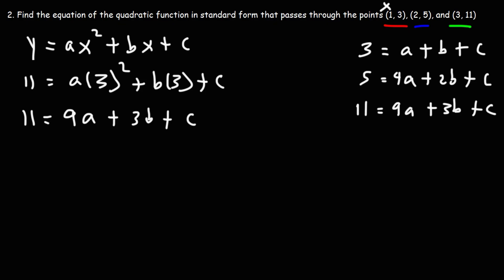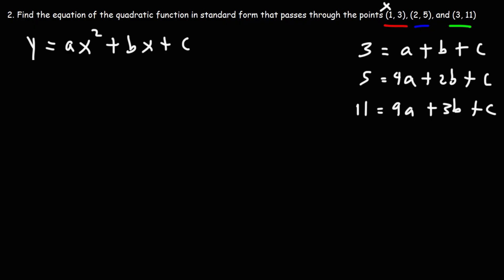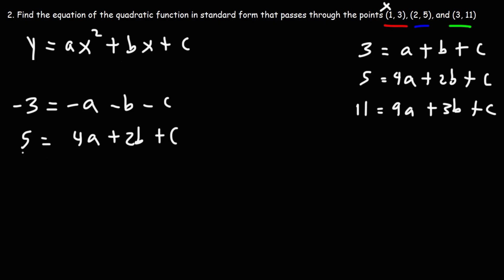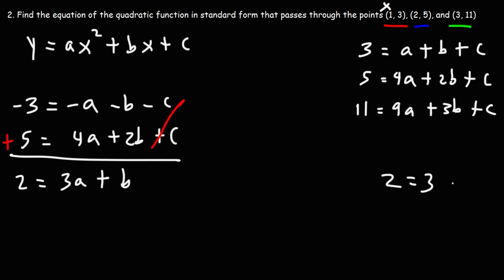So now we have a system of three equations, which we need in order to solve for three variables. Let's use elimination. Let's focus on eliminating c. I'm going to use the first two equations, and I'm going to multiply equation 1 by negative 1. So this becomes negative 3 is equal to negative a minus b minus c. Once we add these two equations, the variable c will cancel. Negative c plus c is 0. Negative 3 plus 5 is 2, negative a plus 4a is 3a, and negative b plus 2b is 1b. So we get equation: 2 is equal to 3a plus b.